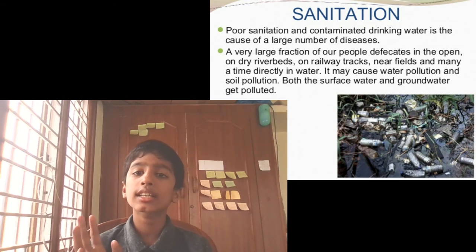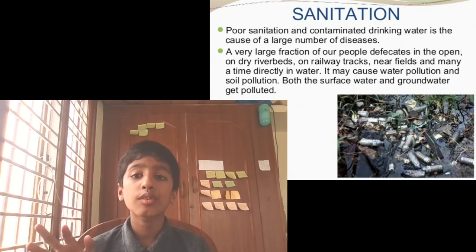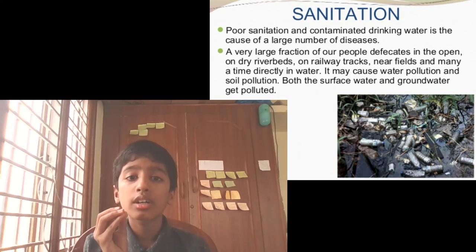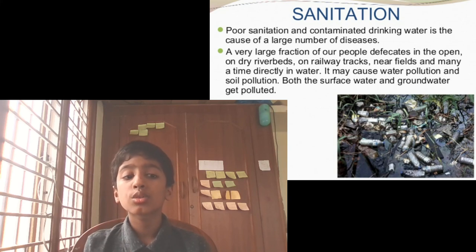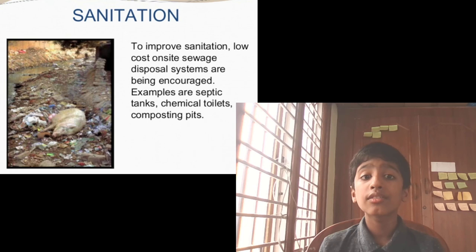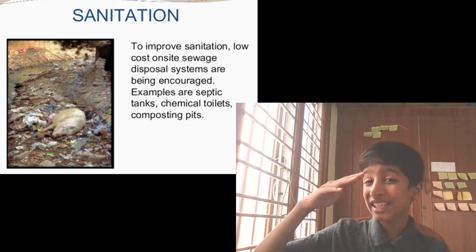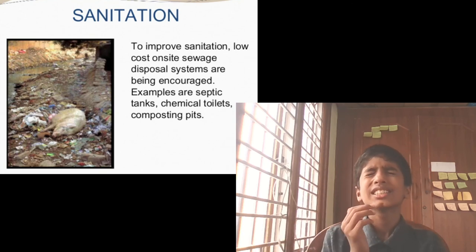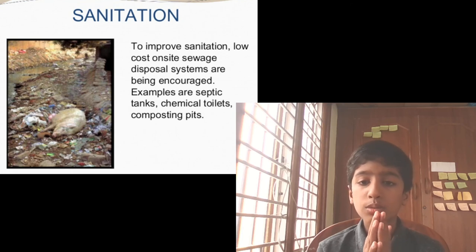Poor sanitation and contaminated drinking water can cause a large number of diseases. A very large fraction of people defecate in the open — on dry river beds, railway tracks, near fields, or even directly in water — causing water pollution and soil pollution, so both surface water and groundwater get polluted. To improve sanitation, low-cost on-site sewage disposal systems are being encouraged, such as septic tanks, chemical toilets, and composting pits.